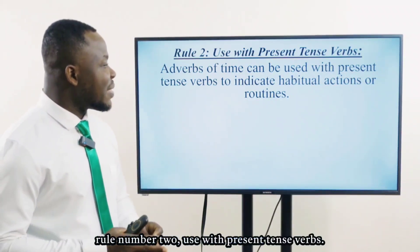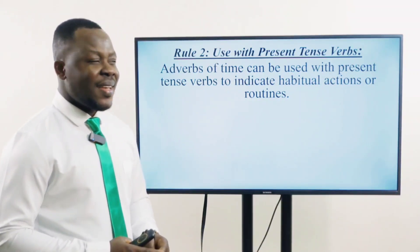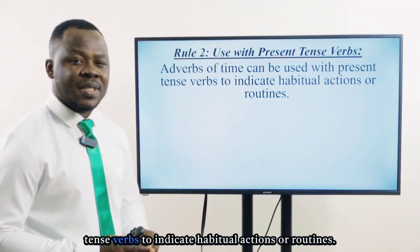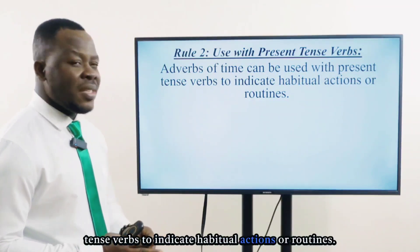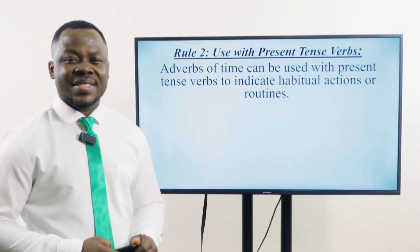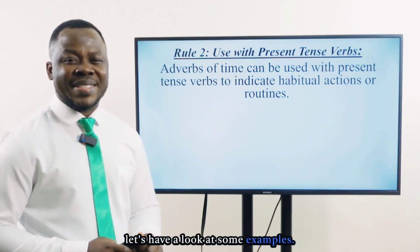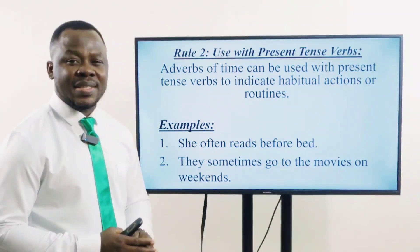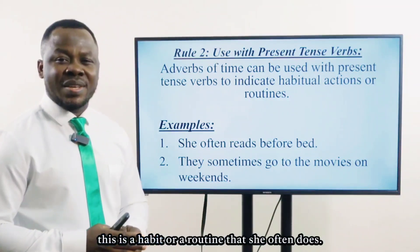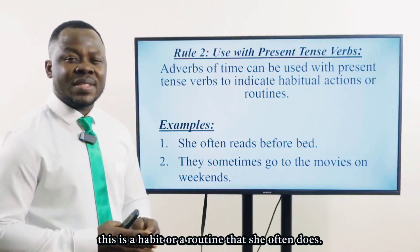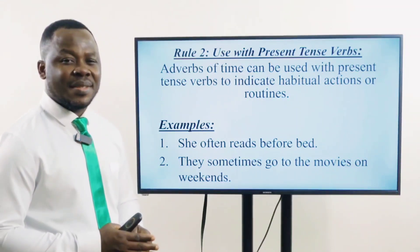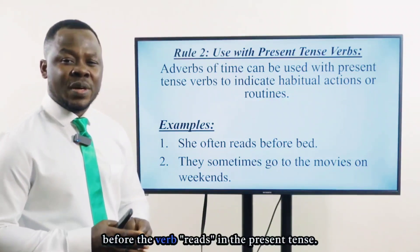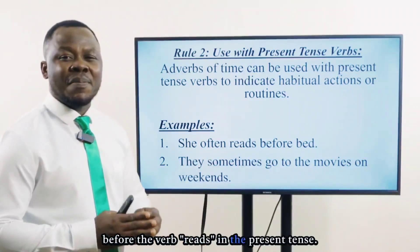Rule number 2: Use with present tense verbs. Adverbs of time can be used with present tense verbs to indicate habitual actions or routines. For example: She often reads before bed. Often is the adverb of time, which comes before the verb reads in the present tense.